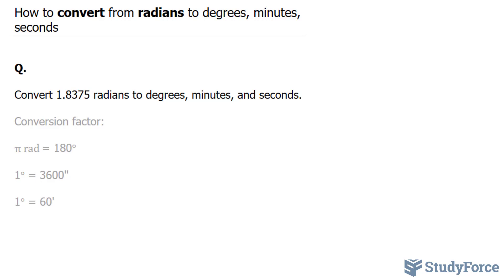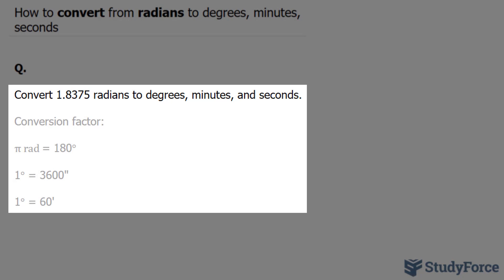In this quick tutorial, I'll show you how to convert radians to degrees, minutes, seconds. The question reads, convert 1.8375 radians to degrees, minutes, seconds.